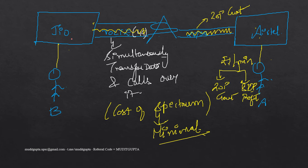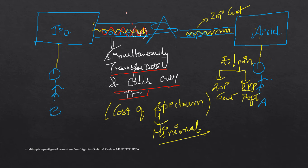Jio said it would not levy IUC because VoLTE is a very cheap and affordable network. In VoLTE networks, IUC — Interconnection Usage Charge — will not apply because the cost is minimal and there is no need for an Interconnection Usage Charge. This is where the new revolution came from: Jio was not charging Interconnection Usage Charge.